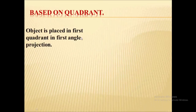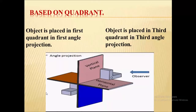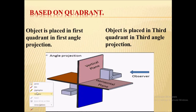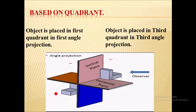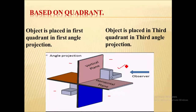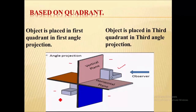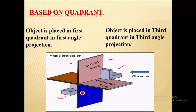First, based on the quadrant. We know there are four quadrants: first quadrant, second quadrant, third quadrant, and fourth quadrant. In case of first angle projection, the object is placed in the first quadrant — hence it is called first angle projection. And in case of third angle projection, the object is placed in the third quadrant — that's why it is called third angle projection.